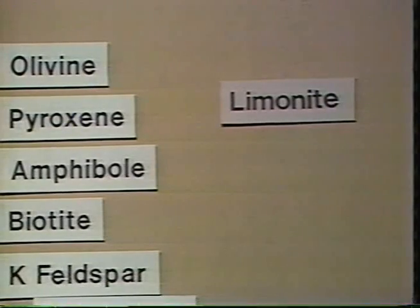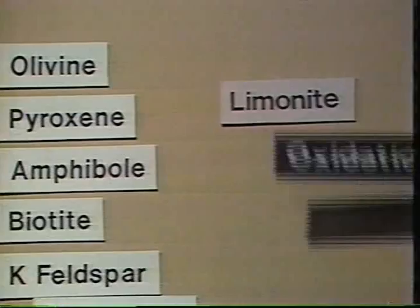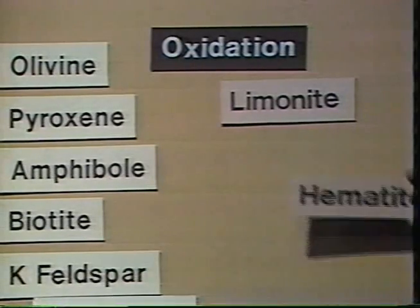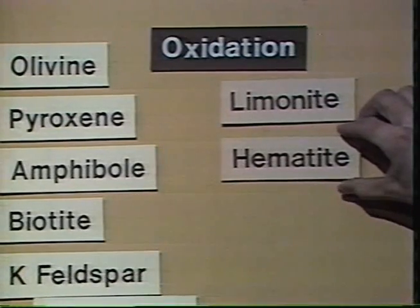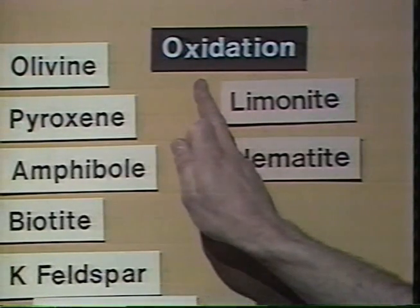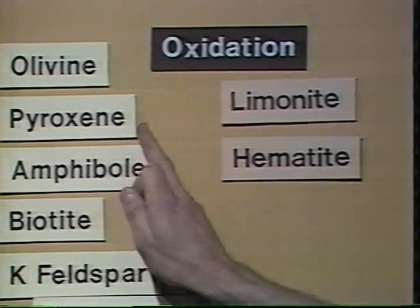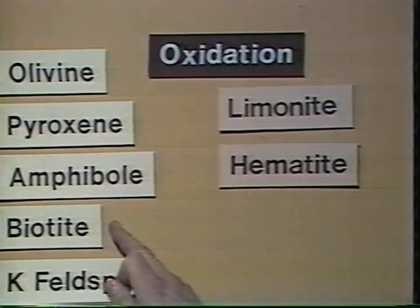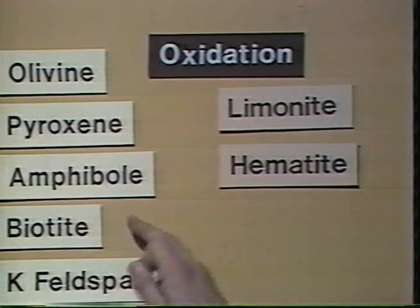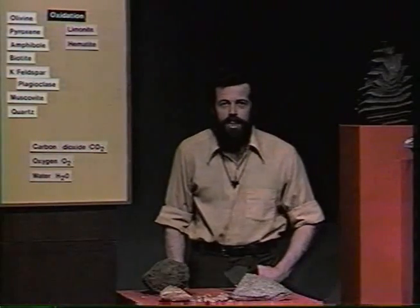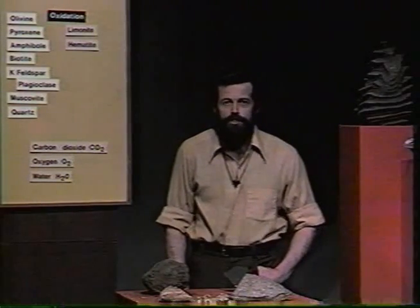That brownish color is iron oxide — the mineral limonite. The process by which the limonite was formed is oxidation, and sometimes instead of limonite we get another iron oxide you already know: hematite. These are minerals produced by the oxidation of the iron present in olivine, pyroxene, amphibole, and biotite. The iron in the original minerals is bound up in the silicate crystals, but when exposed at the surface that iron combines with oxygen to produce limonite and hematite.